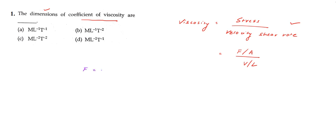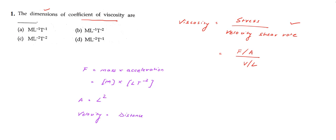First, let us take force, which is equal to mass times acceleration. The dimension of mass is M, and the dimension of acceleration is L·t⁻². After that we have area, whose dimension is L². We all know that.